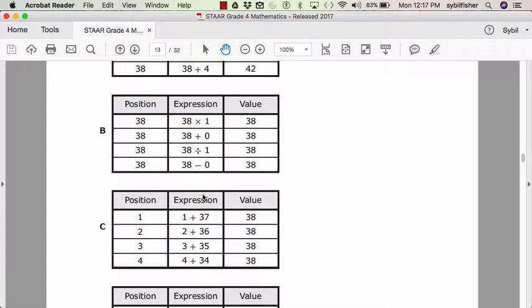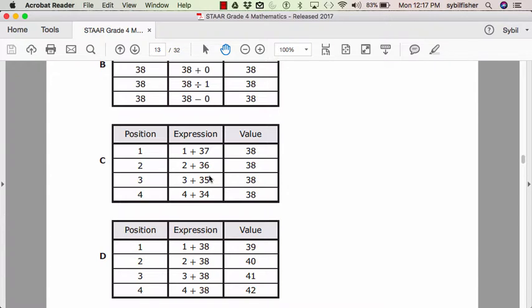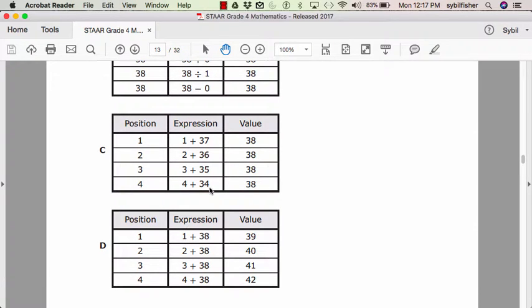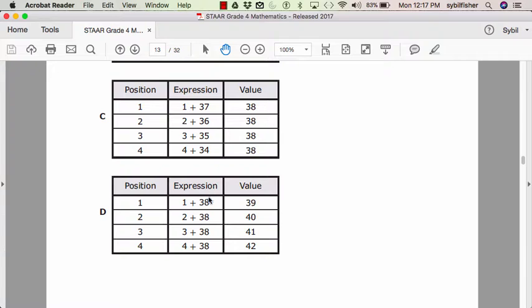Number two, B. The expression is thirty-eight times one, thirty-eight plus zero, thirty-eight divided by one, thirty-eight minus zero. C and D are these.